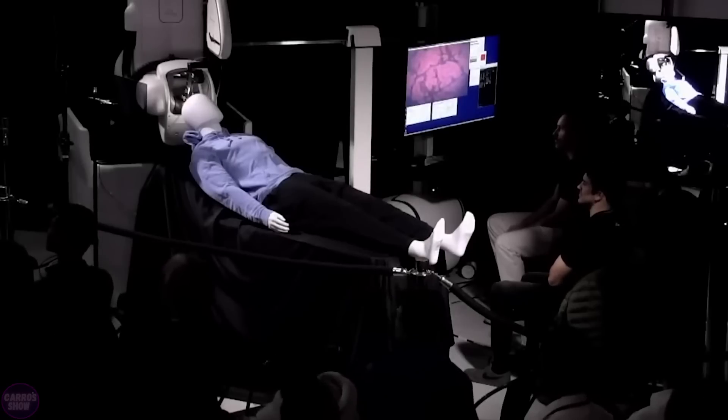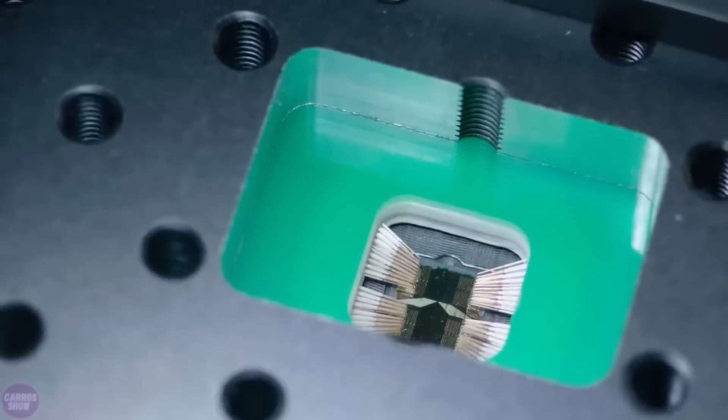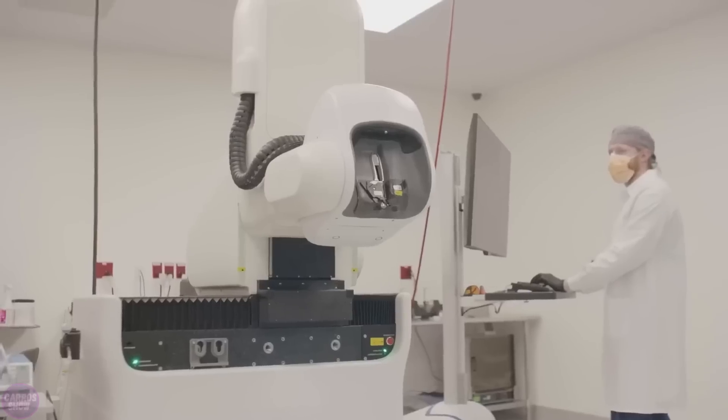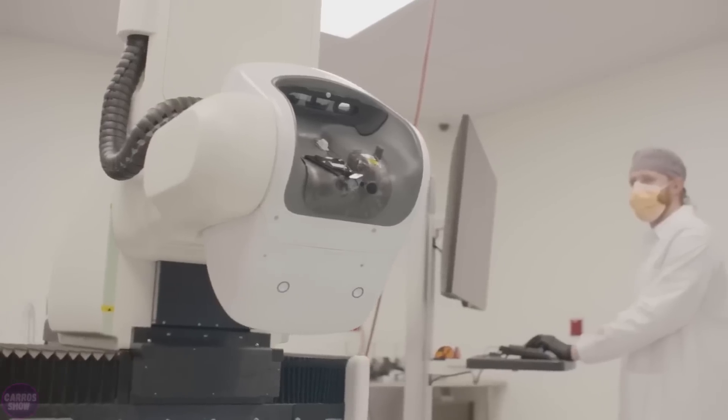The US regulatory authorities have refused to test the Neuralink chip on humans. According to the officials, it is too dangerous. So the company was pointed out to dozens of problems that need to be fixed before the device is connected to the human brain.